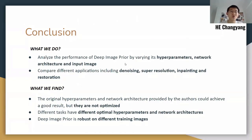In conclusion, in this work we analyze the performance of deep image prior by varying its hyperparameters, network architecture, and input image. We also compare different applications, including denoising, super-resolution, inpainting, and restoration. Through this study, we find that the original hyperparameters and network architecture provided by the authors could achieve a good result, but they are not optimized. Different tasks have different optimal hyperparameters and network architectures. Also, deep image prior is robust on different training images. That's all. Thank you very much.